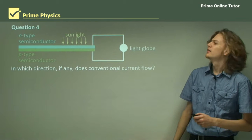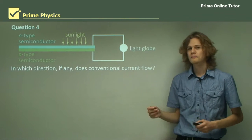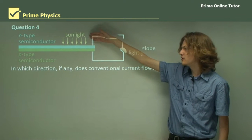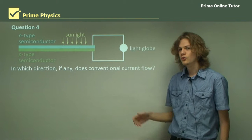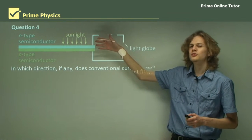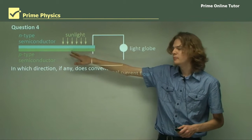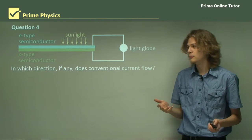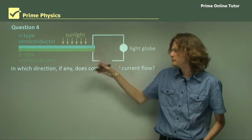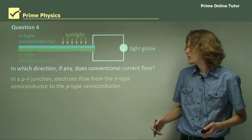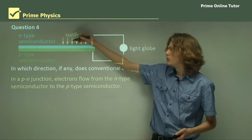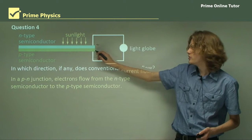Question 4: In which direction, if any, does conventional current flow in this diagram? This is a diagram of a solar cell with two semiconductors sandwiched together — an n-type semiconductor and a p-type semiconductor. The n-type semiconductor has lots of free electrons floating around. When sunlight shines on it, the electrons flow from the n-type into the p-type semiconductor, which has holes that the electrons can fill. This creates a charge difference between them and produces a voltage.